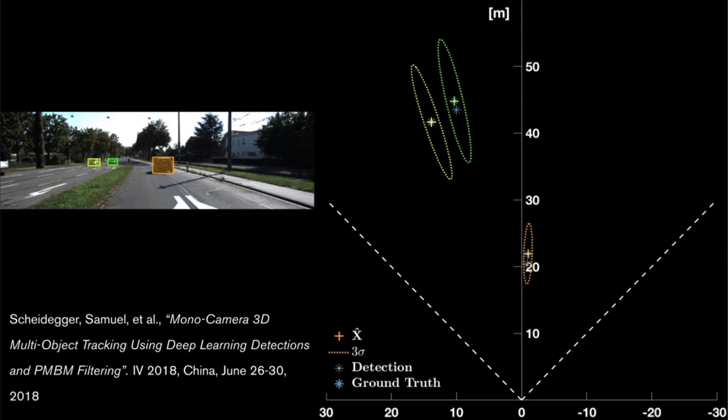So ideally, we want our estimate, the plus markers, to be as close as possible to the true position of the vehicles, the stars, which would mean that our guess of where the vehicle is, is accurate. Now, when we start playing the video, we will also illustrate the trace of the vehicle to show the filtered and true vehicle trajectories over time.